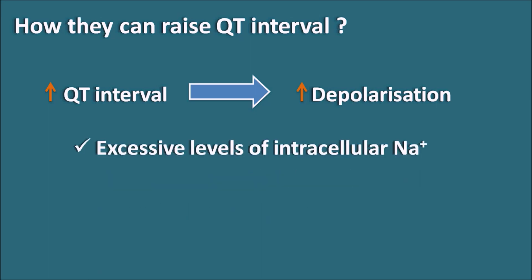For example, within the cardiac membrane, if there are any excessive levels of intracellular sodium present, it may produce persistent depolarization so that it can increase the QT interval. In few of the conditions, we can observe a delayed after-depolarization which may increase the sodium levels within the cardiac membrane, which may increase extrasystoles, resulting in the increase in the QT interval.